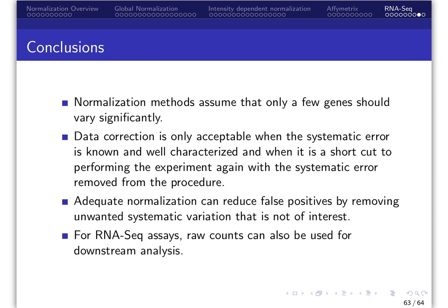In summary, normalization methods assume that only a few genes should vary significantly. Data correction is only acceptable when the systematic error is known and well characterized and when it is a shortcut to performing the experiment again with the systematic error removed from the procedure.